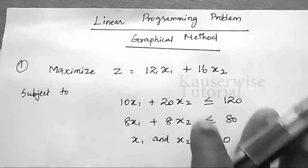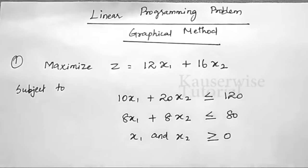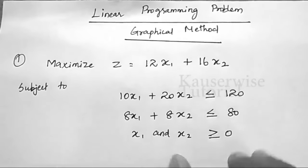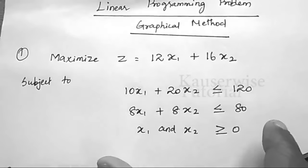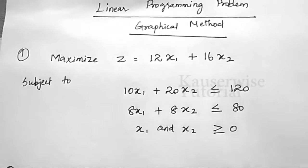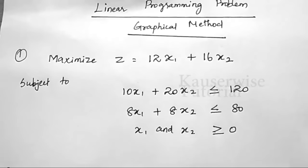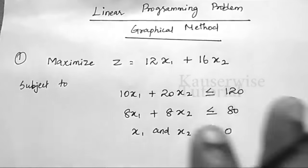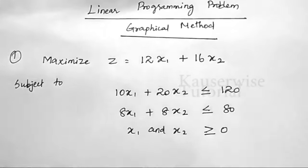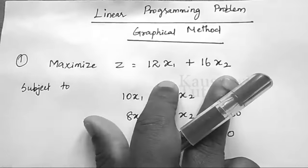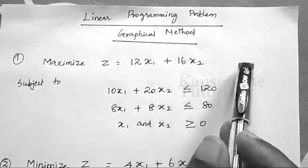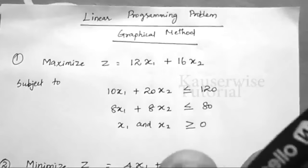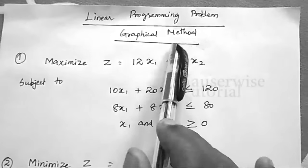In the graphical method, there are different models. With the help of the LPP graphical method, you can find the optimum solution. In LPP, we have different methods: graphical method, simplex method, dual simplex method, and big M method. However, the graphical method is applicable only when we have only two variables. If we have more than two variables, the graphical method is not suitable.